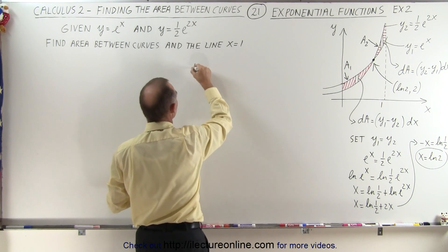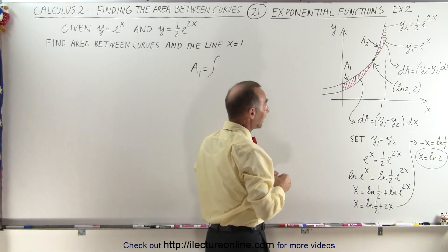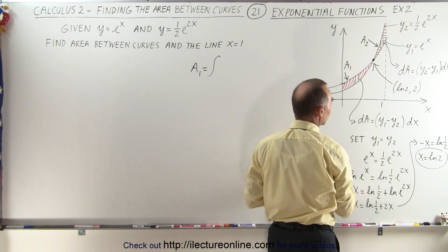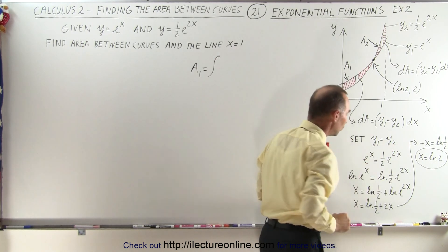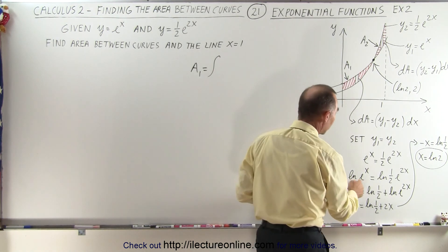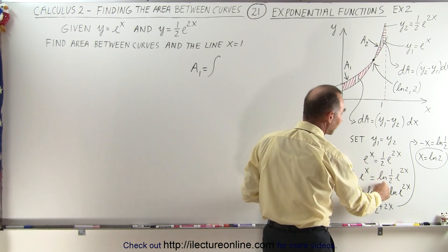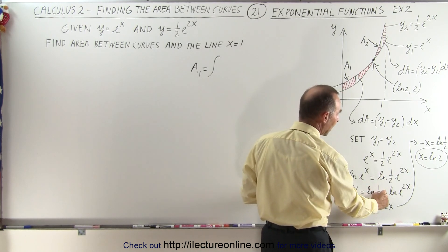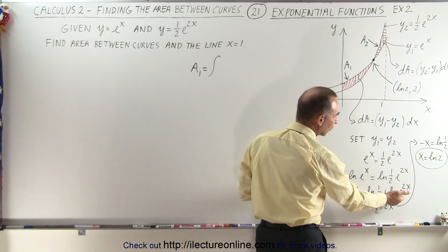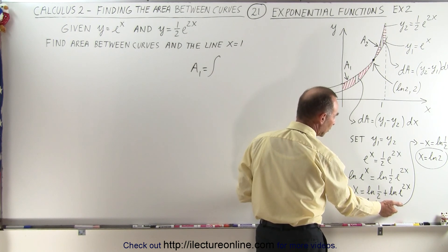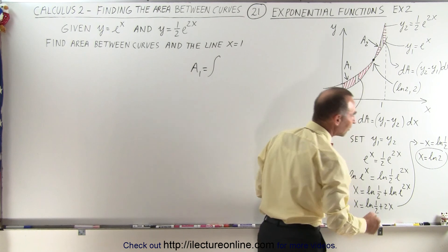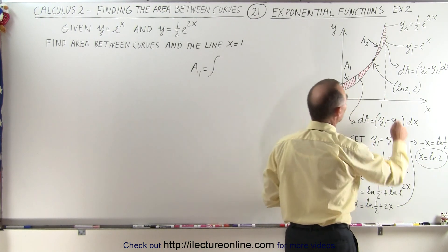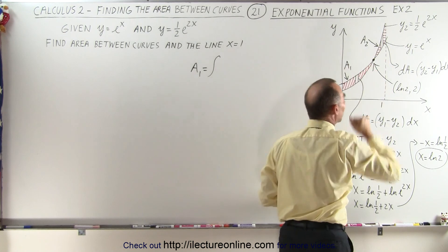Let's find A1. Before we can integrate, we need to know where the two functions cross. We set them equal: e to the x equals 1 half e to the 2x. Taking the natural log of both sides, x equals the natural log of 1 half plus 2x. Subtracting 2x gives minus x equals the natural log of 1 half. Multiplying both sides by negative 1, x equals the natural log of 2, which is the x-coordinate where the two functions cross.